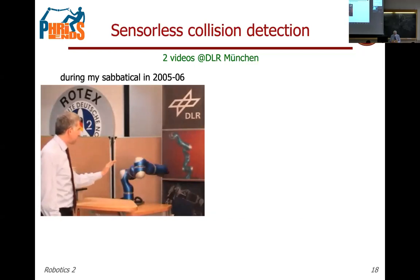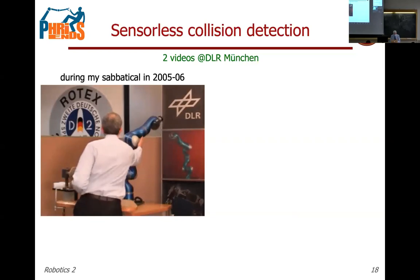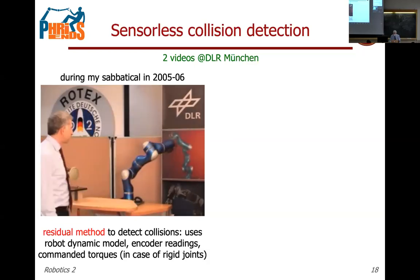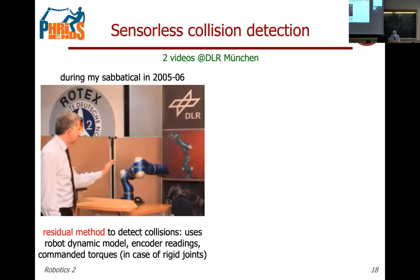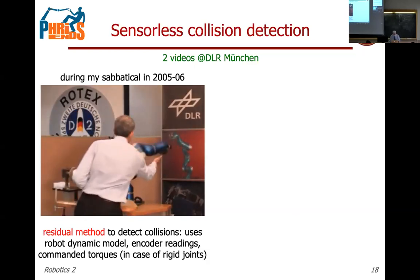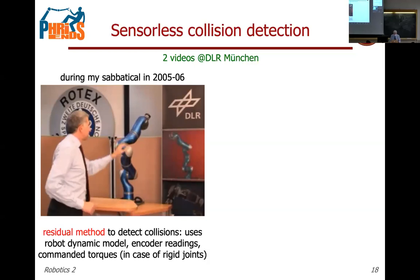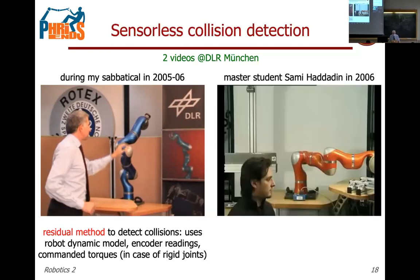The robot was programmed to do a free back-and-forth motion; as soon as a collision is detected it stops and then reacts to any additional force applied — like a floating object — with gravity compensation, all without any force sensing. This is based on a residual signal we developed, which was later embedded in the KUKA lightweight industrial arm. A master student at DLR made a number of experiments including one famous video on this topic.